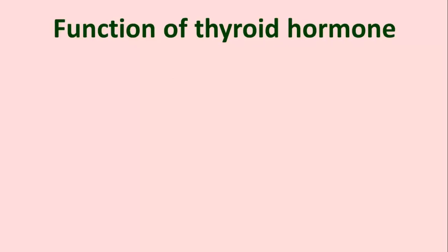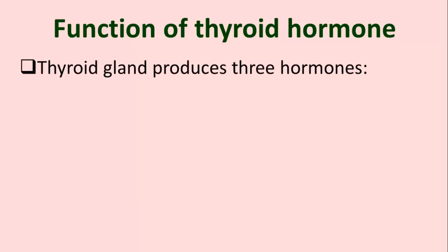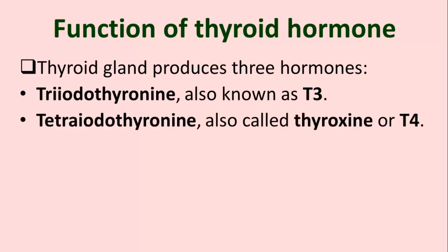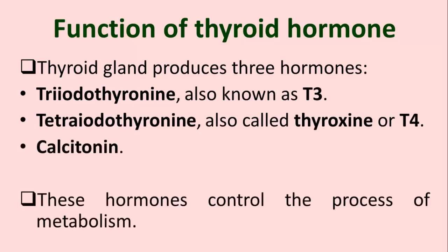Function of thyroid hormone: The thyroid gland produces three hormones — Triiodothyronine, also known as T3; Tetraiodothyronine, also called thyroxine or T4; and Calcitonin. These hormones control the process of metabolism.